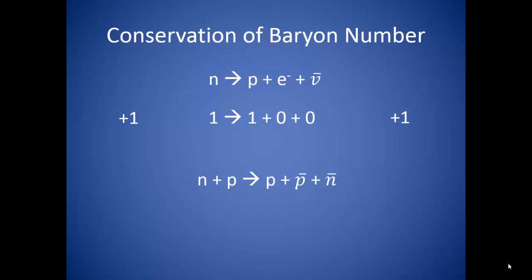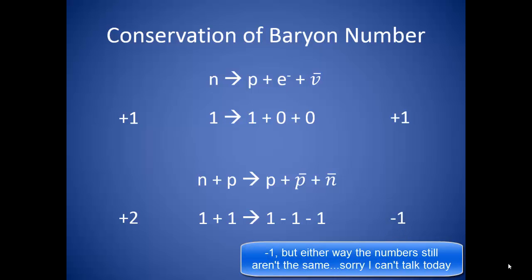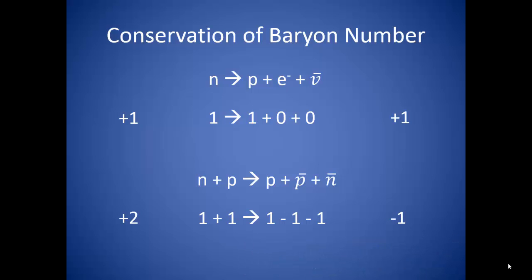What if we consider the interaction between a proton and a neutron? Will we get a proton, antiproton, and an antineutron as a result? Protons and neutrons both have a baryon number of positive one. Antiprotons and antineutrons both have a baryon number of negative one. On the left side of the reaction we have a total baryon number of positive two, while on the right side we have a total baryon number of positive one. In this case, baryon number is not conserved, so this indicates that this particular reaction will not occur.